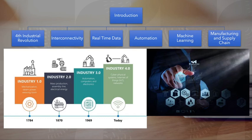This is the new phase of Industrial Revolution. Major focus is on Interconnectivity, Automation, Machine Learning, and Real-Time Data. These are all interconnected with Manufacturing and Supply Chain.